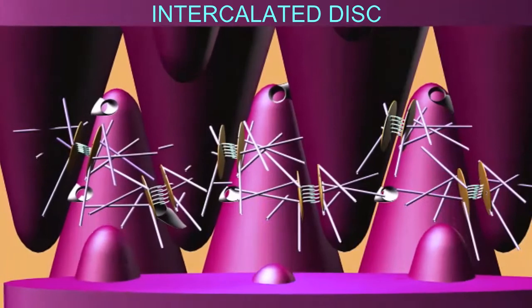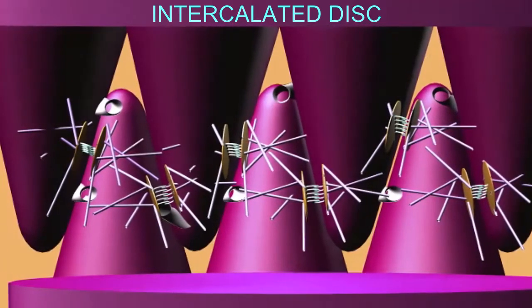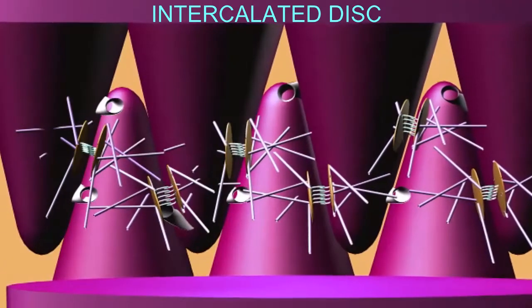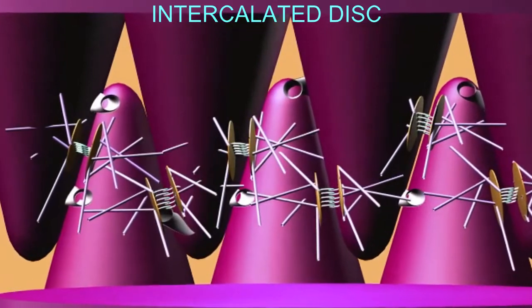At these discs, the conical ends of the cells interlock, and there are two specialized junctions.